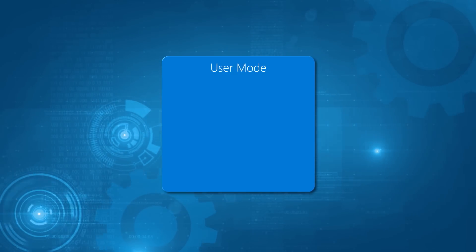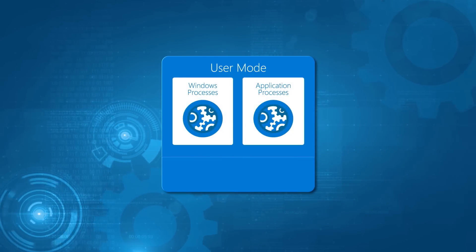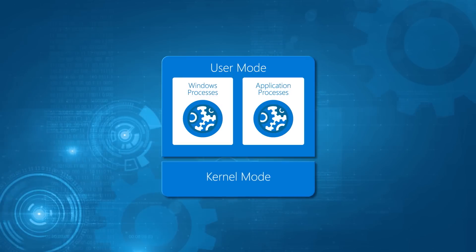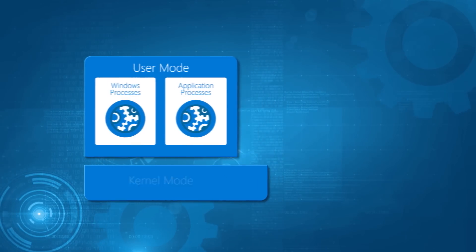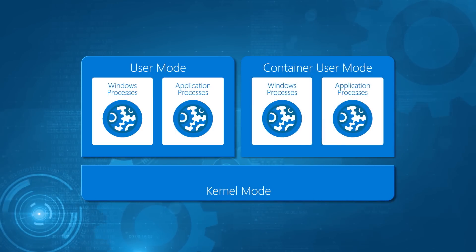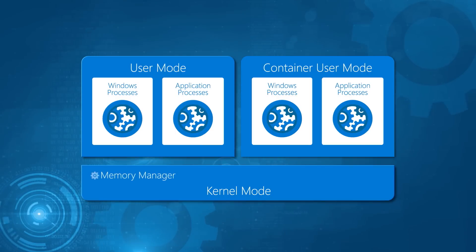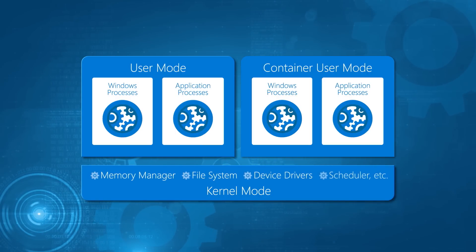So how does it work? Windows consists of user mode processes as well as system processes. What we've done in Windows Server 2016 is enlighten kernel mode so that it can support the operation of multiple instances of user mode. We've made enhancements to the memory manager, the file system, device drivers, and the scheduler. We've also added two forms of isolation: namespace isolation, where each container sees its own file system and registry, and resource isolation, where processes are controlled with respect to how much CPU and network bandwidth they use.